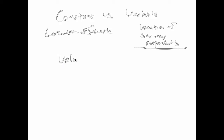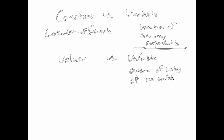Similarly, you could think of a similar distinction between a value and a variable. A value is a particular case of a variable. So a variable might be the outcome of votes of no confidence in a parliamentary system, whereas a particular vote would be a value. A particular no-confidence vote — that's a value. So a value is just a particular case or realization of a variable.